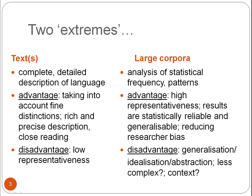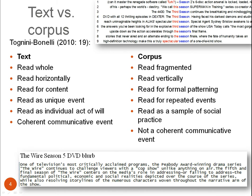To continue with this debate about text versus corpus, Tognini-Bonelli (2010) proposes that the difference between approaching a text and approaching a corpus is that a text is typically read whole, read horizontally, read for content, read as a unique event, read as an individual act of will, and as a coherent communicative event. In contrast, a corpus is typically read fragmented, read vertically, read for formal patterning, read for repeated events, read as a sample of social practice, and not read as a coherent communicative event.